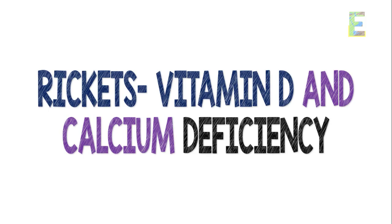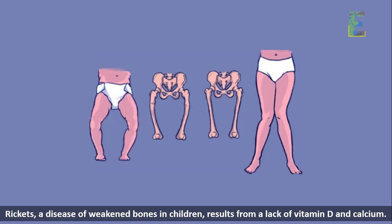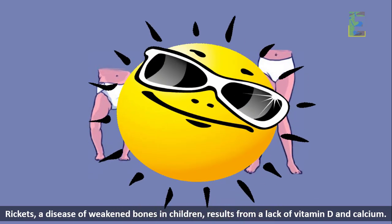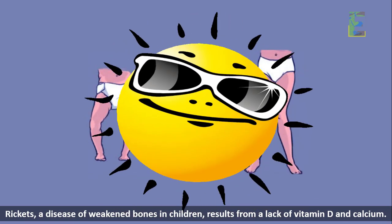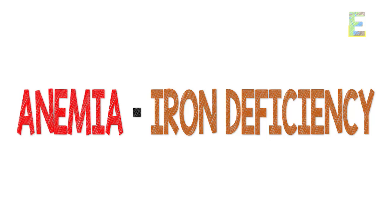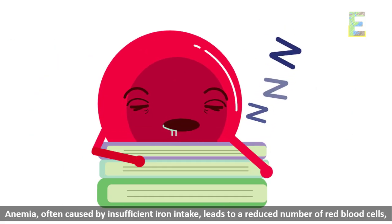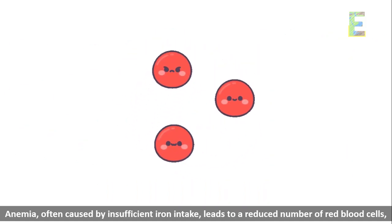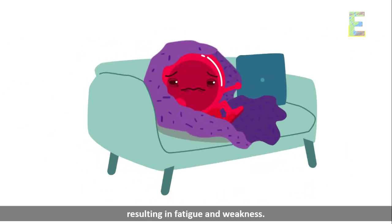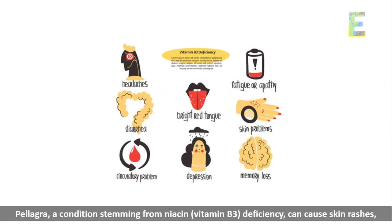Rickets, a disease of weakened bones in children, results from a lack of vitamin D and calcium. It can cause deformities and fractures. Anemia, often caused by insufficient iron intake, leads to a reduced number of red blood cells, resulting in fatigue and weakness.